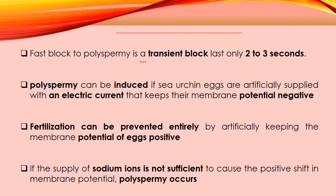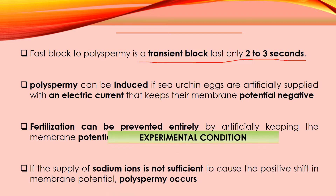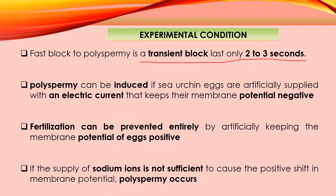The fast block of polyspermy is a transient block because it lasts only for 2 to 3 seconds. After 2 to 3 seconds, the membrane potential of the egg plasma membrane changes again, which may lead to polyspermy. That is why the slow block of polyspermy is also essential. The fast block of polyspermy is immediately followed by the slow block of polyspermy, which we will discuss in an upcoming video.